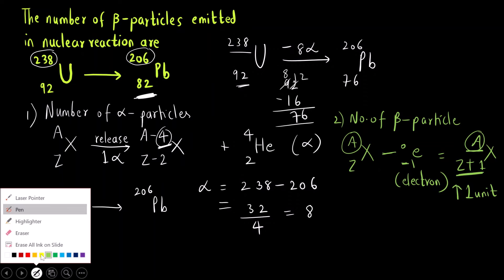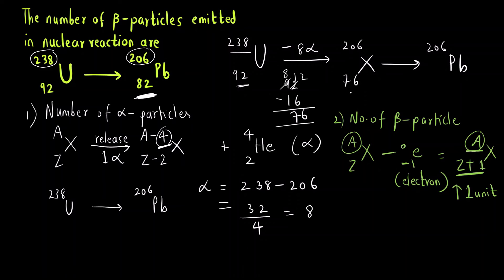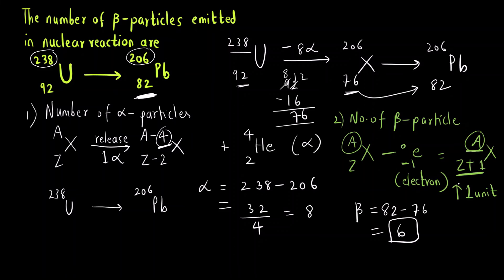Writing the final product: after alpha emission we have atomic number 76, and we need to reach lead with atomic number 82. The atomic mass remains the same at 206. To find the number of beta particles, subtract 76 from 82: 82 minus 76 equals 6. Since each beta particle increases the atomic number by 1, we need 6 beta particles.